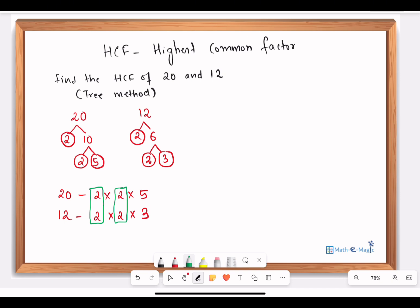That means the HCF of 20 and 12 is the product of these two numbers. So 2, which I get from here, times 2, which I get from here, which is equal to 4. So HCF of 20 and 12 is equal to 4.